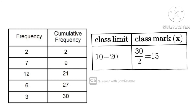For class mark, you add the upper class limit plus the lower class limit together, then divide by two to get your class mark. Similarly, if you are using class boundary, you add the two boundaries together and divide by two to get your class mark.